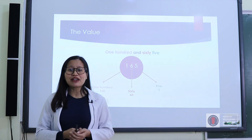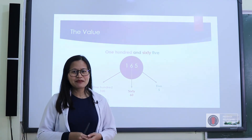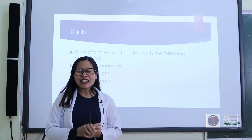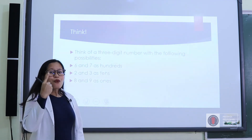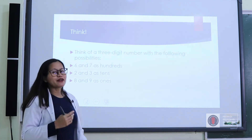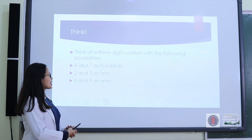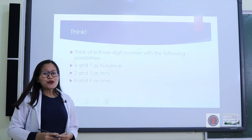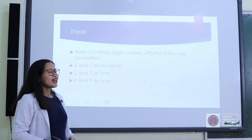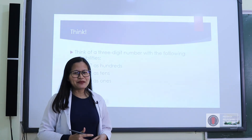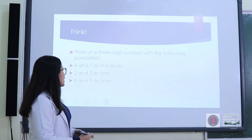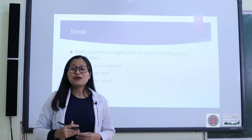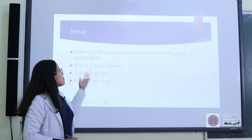Can you make the place value of another three-digit number? Try. Now, I would like you to think of a three-digit number with the following possibilities: six and seven for the hundreds, two and three as the tens, eight and nine as the ones. You can make any three-digit numbers with these combinations. We will discuss this on the Zoom session.